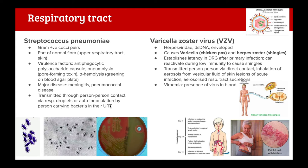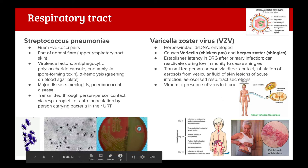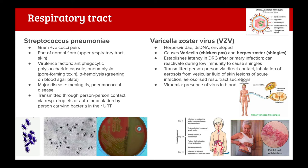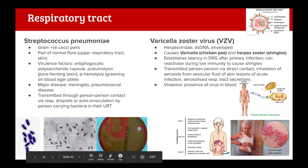Varicella zoster virus: a Herpesviridae dsDNA enveloped virus responsible for chicken pox and shingles. You initially get infected with chicken pox, and the virus then establishes latency in the dorsal root ganglion affecting nerve cells. It can reactivate when immunity is low, causing shingles. It's transmitted person-to-person by direct contact, inhalation of aerosols from lesion fluid, or respiratory tract secretions.